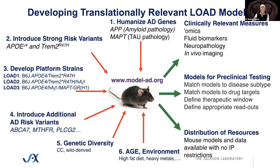To summarize where we are: we're focusing on humanized genes, focusing on risk variants, and putting those risk variants in platform strains. What we're focusing on now is humanized APOE4, humanized Aβ, and humanized tau with H1 haplotype — that's our LOAD3 model. We're then going to introduce other AD risk variants either by mating models together or CRISPRing directly into this LOAD3 model. We are also looking at collaborative cross and wild-derived backgrounds, and we have posters addressing that at ADPD. We're focusing on extreme ages and environmental risks.